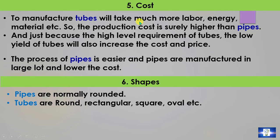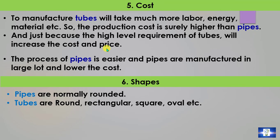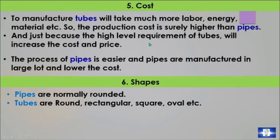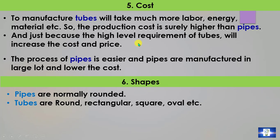Point 5: Cost. Manufacturing tubes requires much more labor, energy, and material, so the production cost is surely higher than for pipes. The high-level requirements for tubes further increases the cost and price. On the other hand, pipe manufacturing is easier, so pipes are manufactured in large lots, lowering the cost compared to tubes.